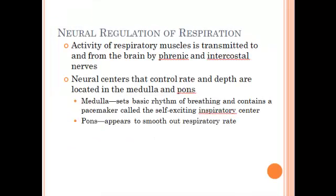Respiration is controlled by our nervous system, and there are two nerves that come from the brain — cranial nerves that control respiration. You'll probably recognize the names from earlier lectures on the nervous system: the phrenic nerve and the intercostal nerves. The neural centers that control the rate and depth of breathing are found in the medulla oblongata and in the pons.